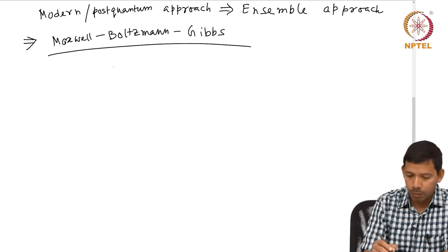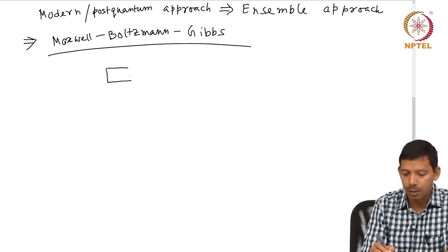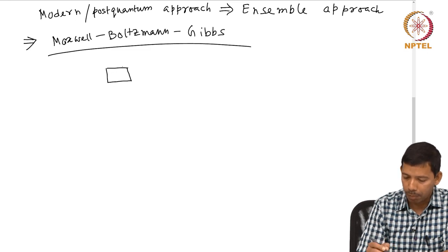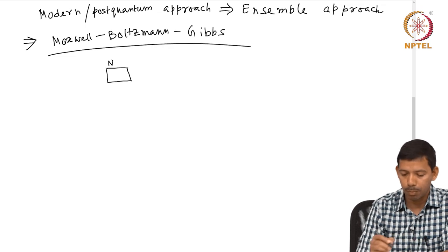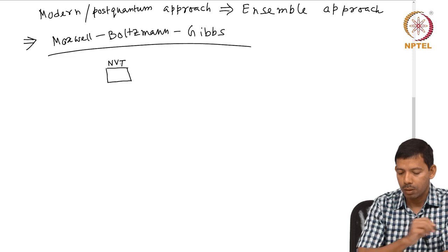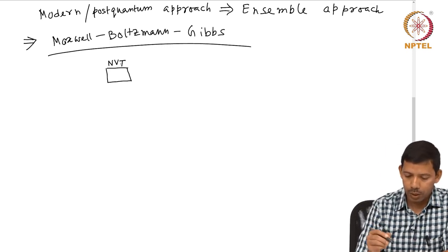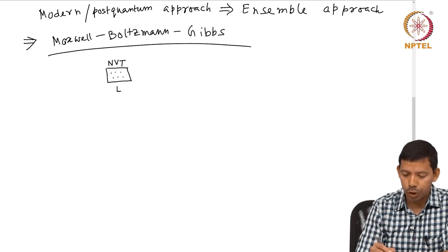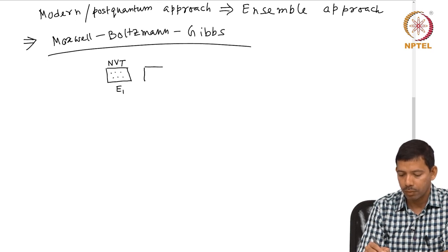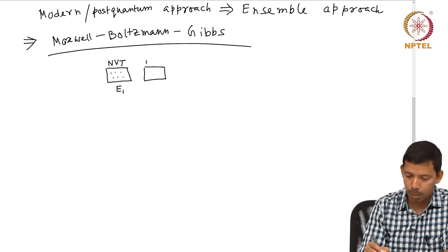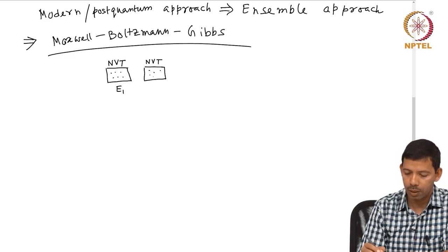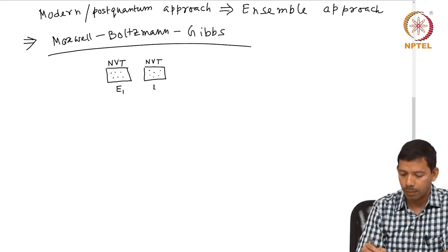Let us see what is meant by ensemble. Let us say this is my box and I have n number of particles in it, with a volume v and temperature T — so the system has NVT. Here my n particles are distributed in a certain way, and this gives the energy of the system as E1. Now I can have the same system with the same number of particles, same volume, same temperature, but with the particles distributed a little differently, giving energy E2.